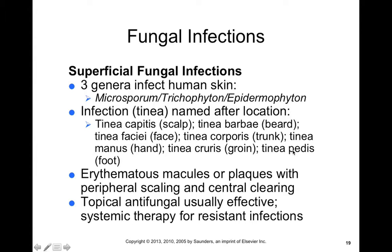Tinea causes an erythematous macule or plaques with peripheral scaling and central clearing. Because of this peripheral scaling and central clearing, it has a circular type of rash — it's going to look more like a ring. This is why people mistake it for a worm and call it ringworm. However, ringworm has nothing to do with a worm infection of your skin — it's a fungal infection that just looks that way because of peripheral scaling and central clearing making it ring-shaped. Topical antifungals are usually effective; however, systemic therapy may be required for more resistant infections.